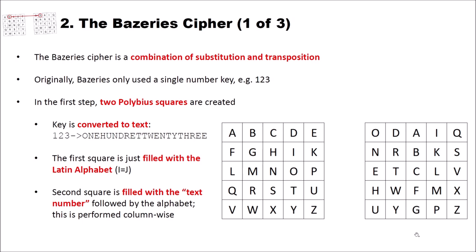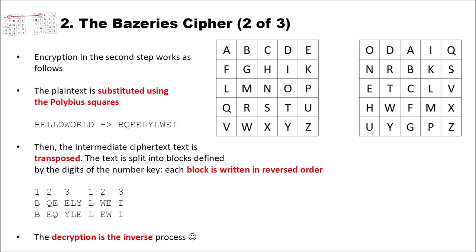Now let's encrypt some text. And the encryption in the second step works as follows. First, the plain text is substituted using the Polybius squares. For example, let's encrypt hello world. We look for the letter in the plain text H. We have it here. And we search in the second Polybius square the letter at the same position. In this case, we have a B and we write a B. For the E, we do the same. We have the E here. So we have a Q here. We get a Q.